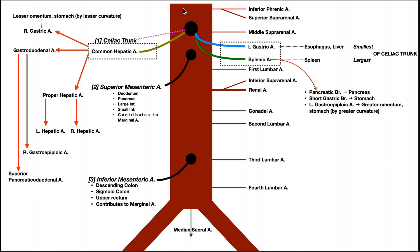We are now looking at the part of the descending aorta underneath the thoracic diaphragm. The diaphragm is the major skeletal muscle involved in inhalation. There's a hole in the diaphragm called the aortic hiatus, which allows the aorta to descend through it downwards. Above the diaphragm is the thoracic aorta; below it is the abdominal aorta.